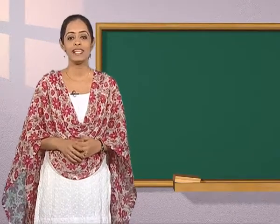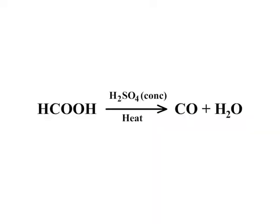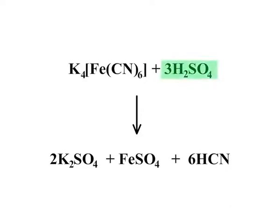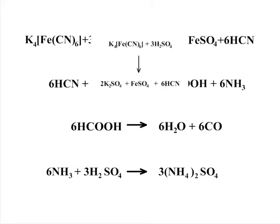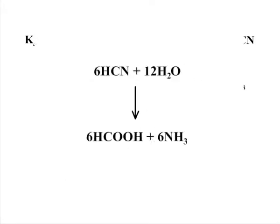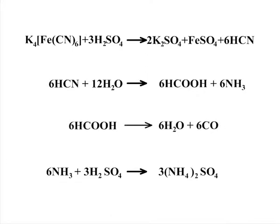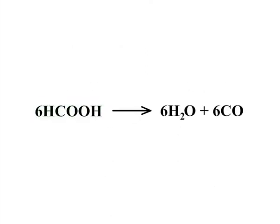Ferric oxide reacts with carbon when heated to form iron and carbon monoxide. In the laboratory, carbon monoxide can be prepared by the dehydration of formic acid with concentrated sulfuric acid. It can also be prepared by heating potassium ferrocyanide with concentrated sulfuric acid to form potassium sulfate, ferrous sulfate and hydrogen cyanide. 6 moles of hydrogen cyanide reacts with 12 moles of water to form 6 moles of formic acid and 6 moles of ammonia.